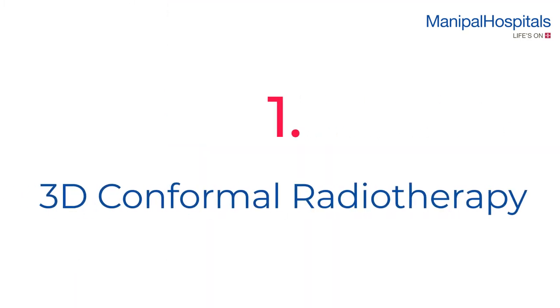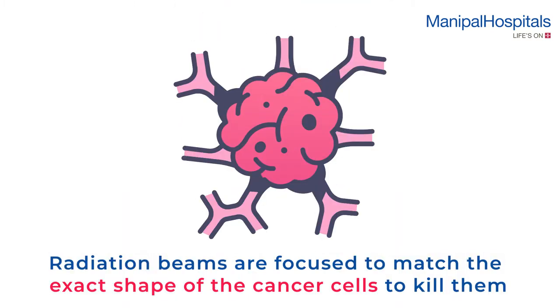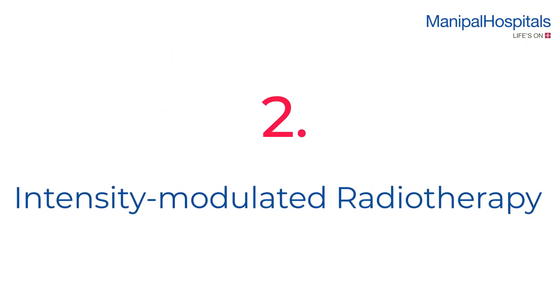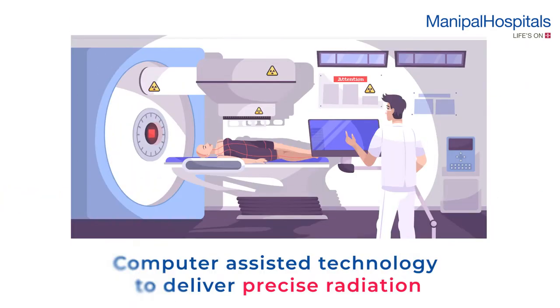Number one: 3D conformal radiotherapy. In this treatment, radiation beams are focused to match the exact shape of the cancer cells to kill them precisely and avoid harm to neighboring healthy cells. Number two: intensity modulated radiotherapy. This treatment uses computer-assisted technology to deliver a precise radiation dose at a specific area.